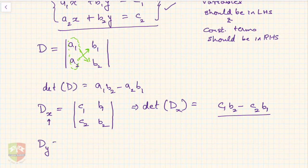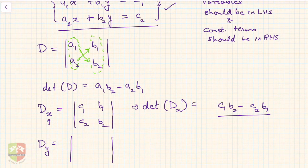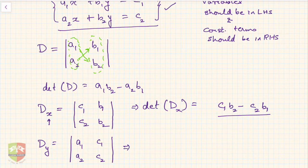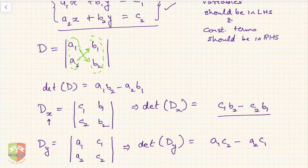Similarly, I define determinant Dy. Take determinant D and replace the coefficients of y — that is b₁ and b₂ — with the constant terms c₁ and c₂. So Dy is the determinant with columns a₁, a₂ and c₁, c₂, giving the value a₁c₂ minus a₂c₁.